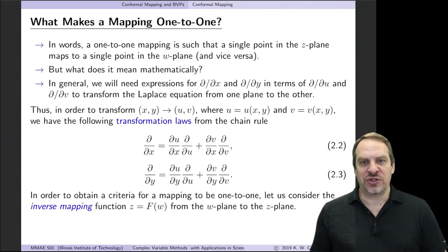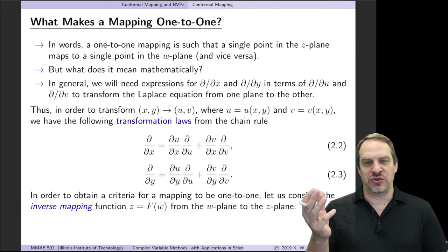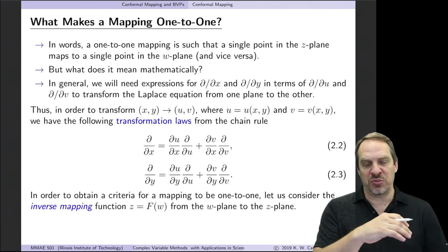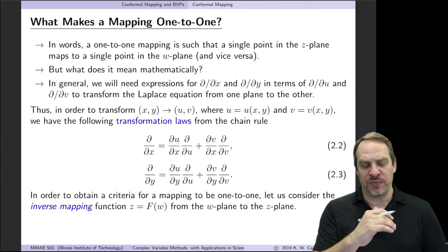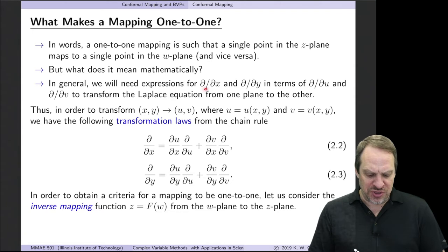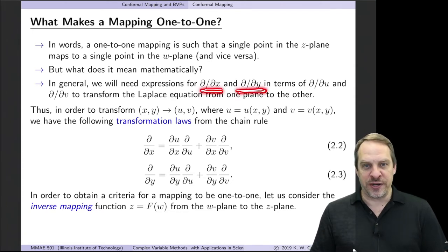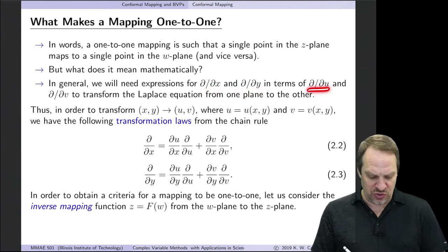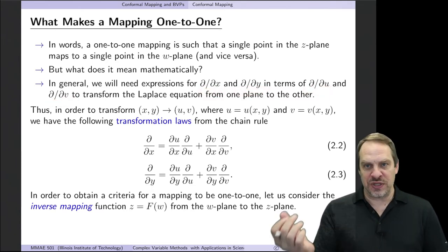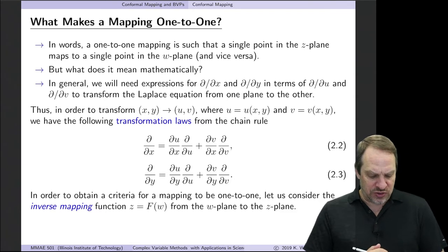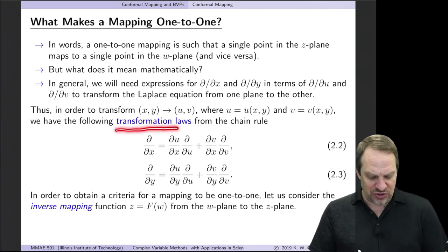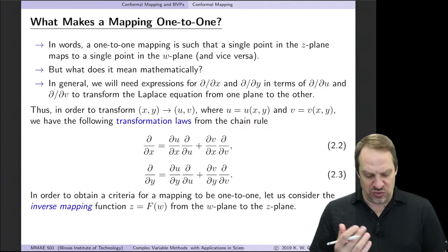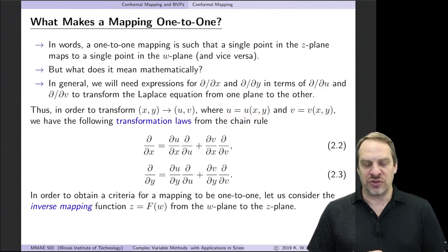To answer that question, let's think ahead a little bit. The third question, if you remember, is what does Laplace's equation transform to in the w-plane, from the z-plane to the w-plane? In order to do that transformation, we're going to need to transform derivatives with respect to x and y into derivatives with respect to u and v. The way we do that is through transformation laws, which basically apply the chain rule to two functions, u and v, that are both functions of x and y.